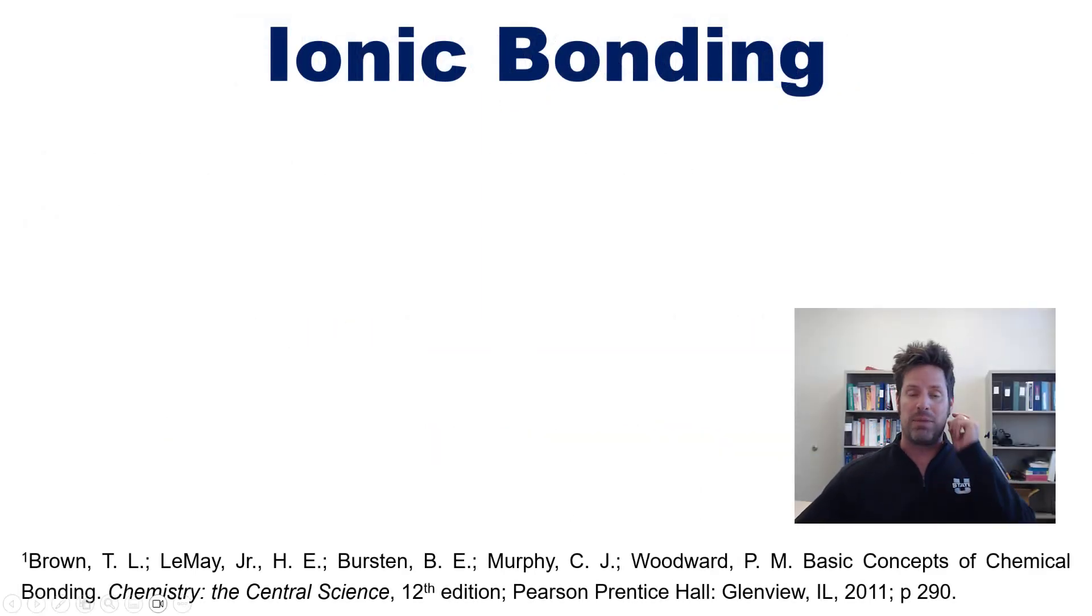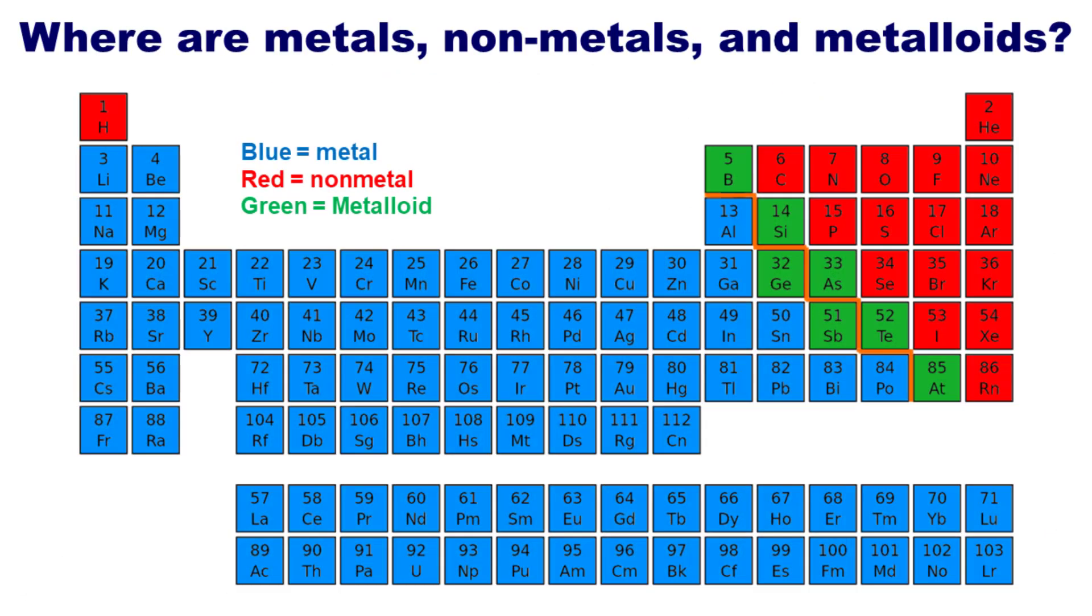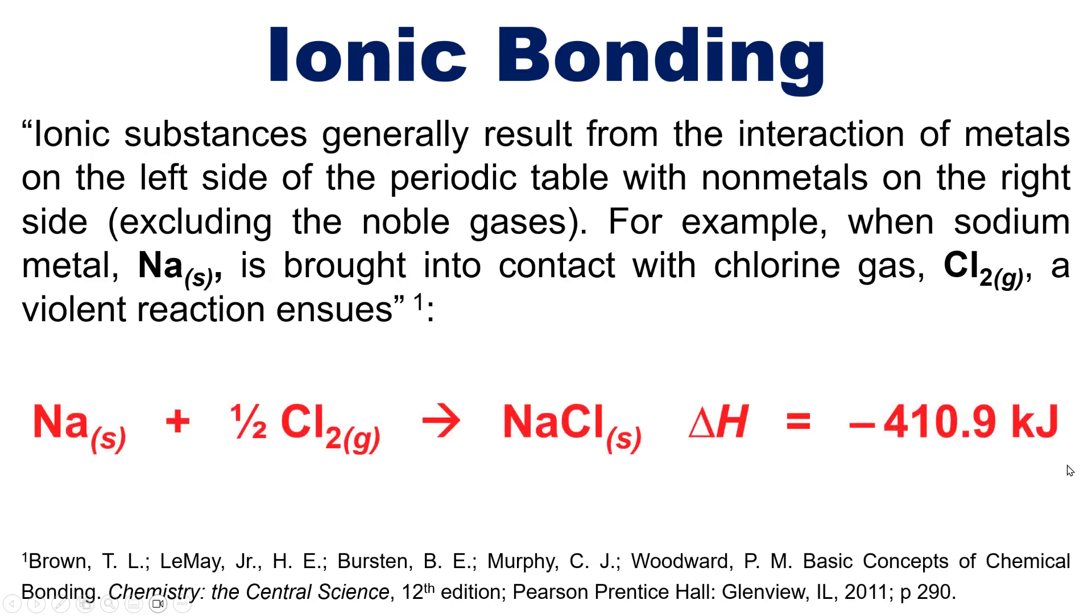According to our text referenced here and in the description beneath this video, ionic substances generally result from the interaction of metals on the left side of the periodic table with non-metals on the right side excluding the noble gases. For example, when sodium metal Na solid is brought into contact with chlorine gas, a violent reaction ensues summarized by this balanced chemical equation.